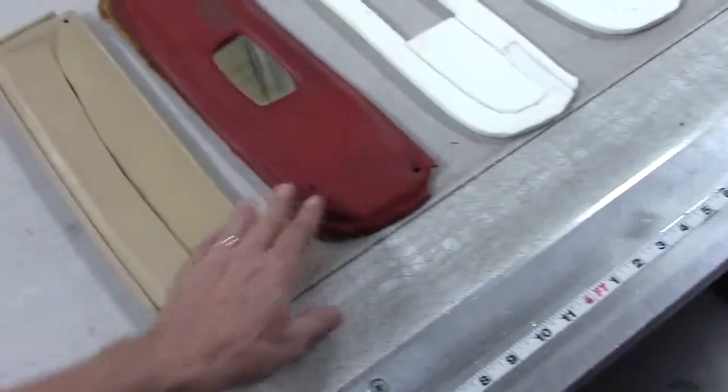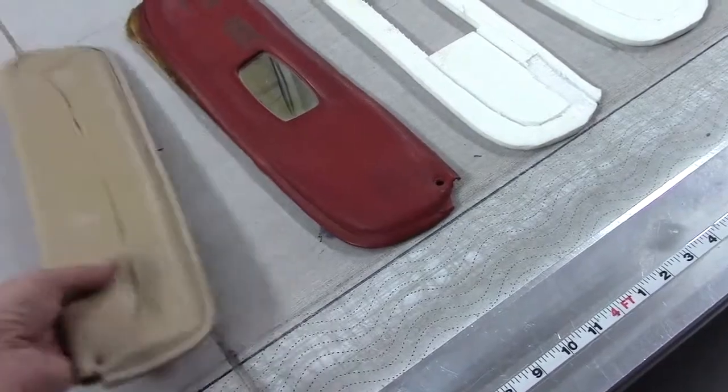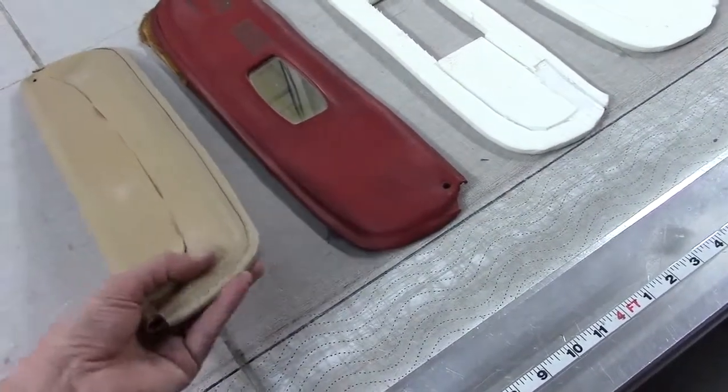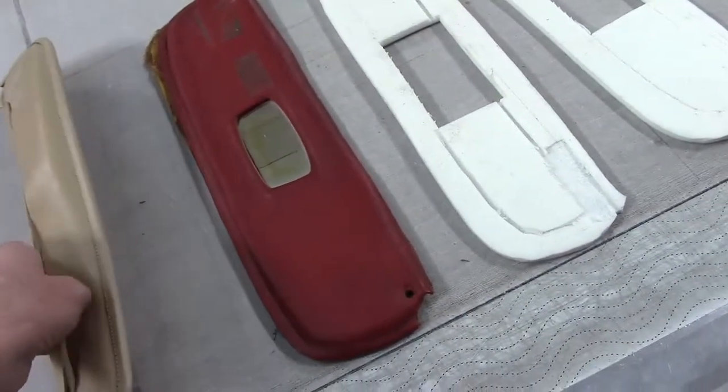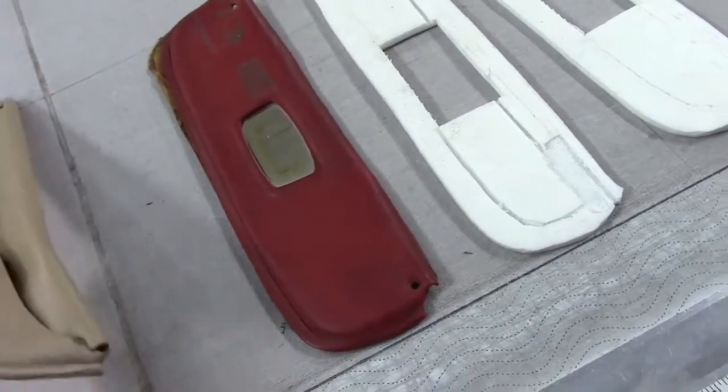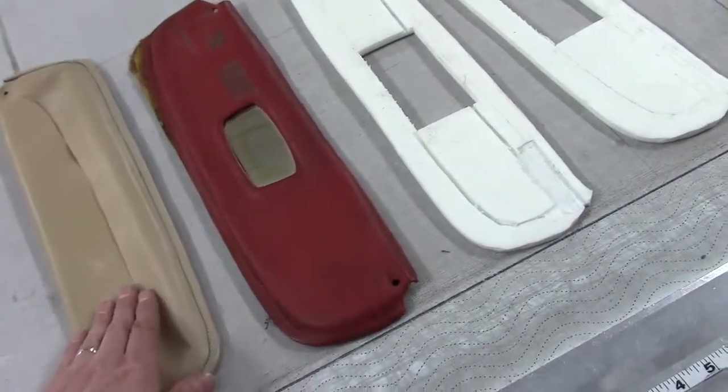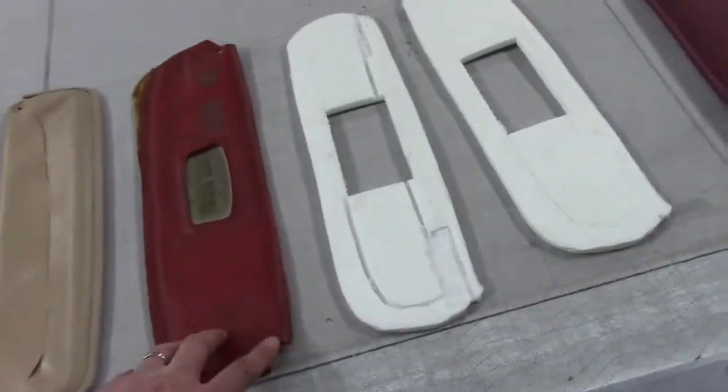You can see a couple of things on these original sun visors. This is a sun visor that's used on the hard top. You can see it's smaller in profile and typically, I believe that all of them came this beige color on the hard tops.